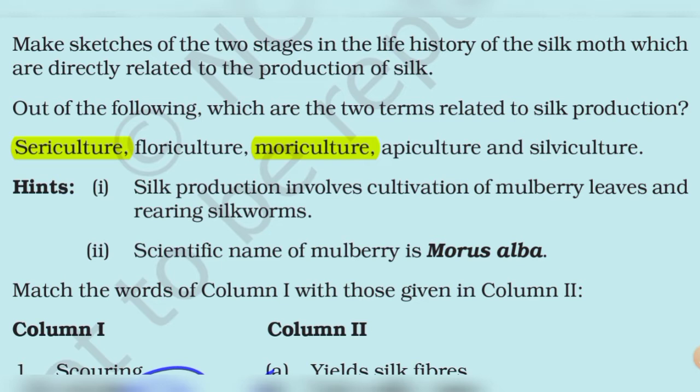Here is a hint: silk production involves cultivation of mulberry leaves and rearing of silkworms. Mulberry means 'toot.' The cultivation of mulberry leaves and the rearing of silkworms are related. The scientific name of mulberry is Morus alba.